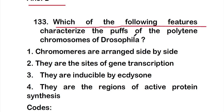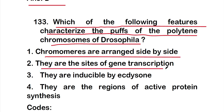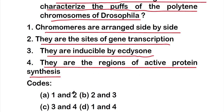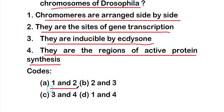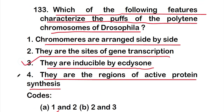Question 133: Which of the following features characterize the puff of the polytene chromosome of Drosophila? Options: (1) chromomeres are arranged side by side; (2) they are the site of gene transcription; (3) they are inducible by active zones; (4) they are the region of active protein synthesis. The right answer is option C — statements three and four are correct.